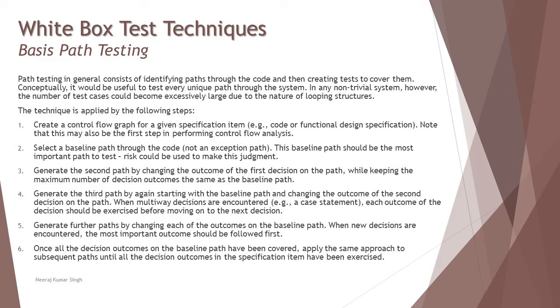That's the way how your branching of the path testing must be done. Generate further paths by changing each of the outcomes of the baseline path and then count the number of test cases. Once all the decision outcomes on the baseline path have been covered, apply the same approach to the subsequent path until all decision outcomes in the specification have been exercised.